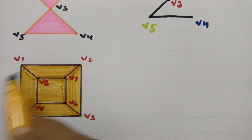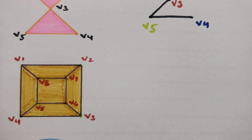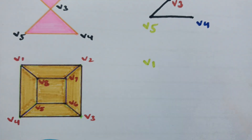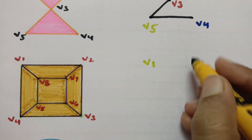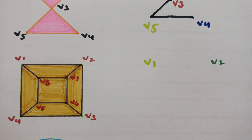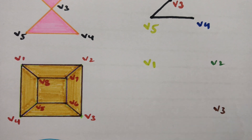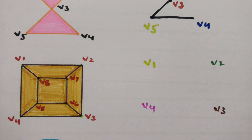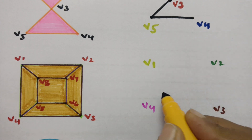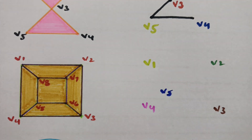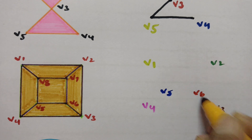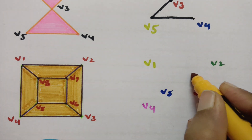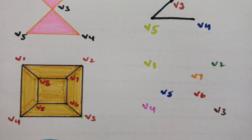Coming to the next example. There are eight vertices here: v1, v2, v3, v4, v5, v6, v7, and v8.